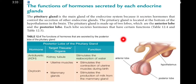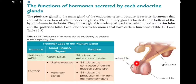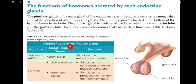The pituitary gland is made up of two lobes - the anterior lobe and the posterior lobe. Each lobe secretes different hormones that have certain functions. The posterior lobe of the pituitary gland secretes hormones with specific target tissues or organs.